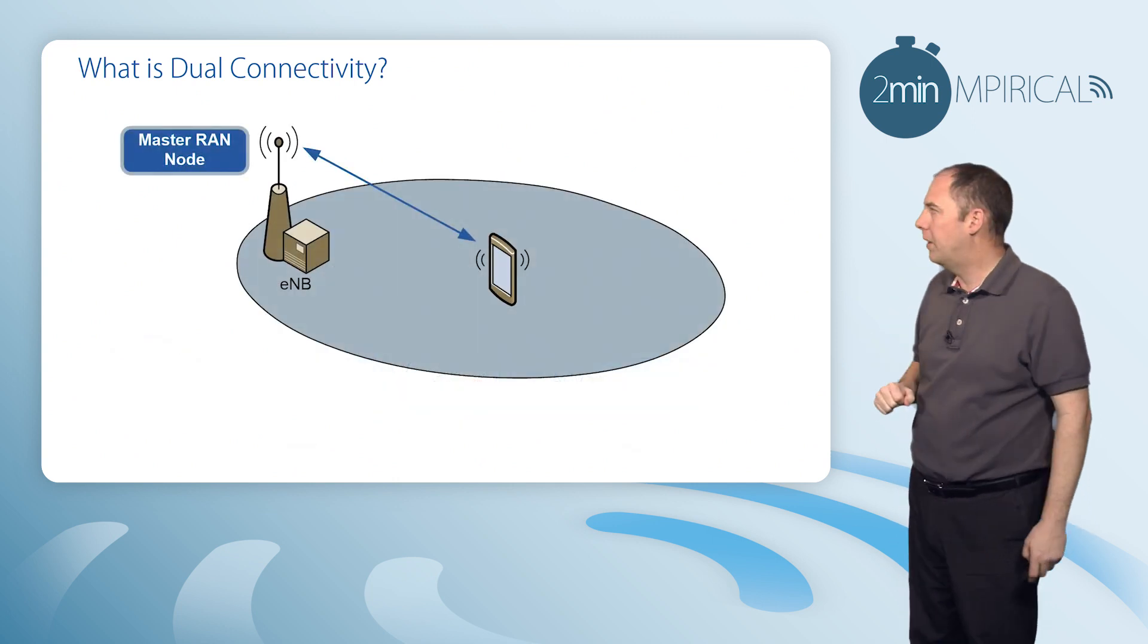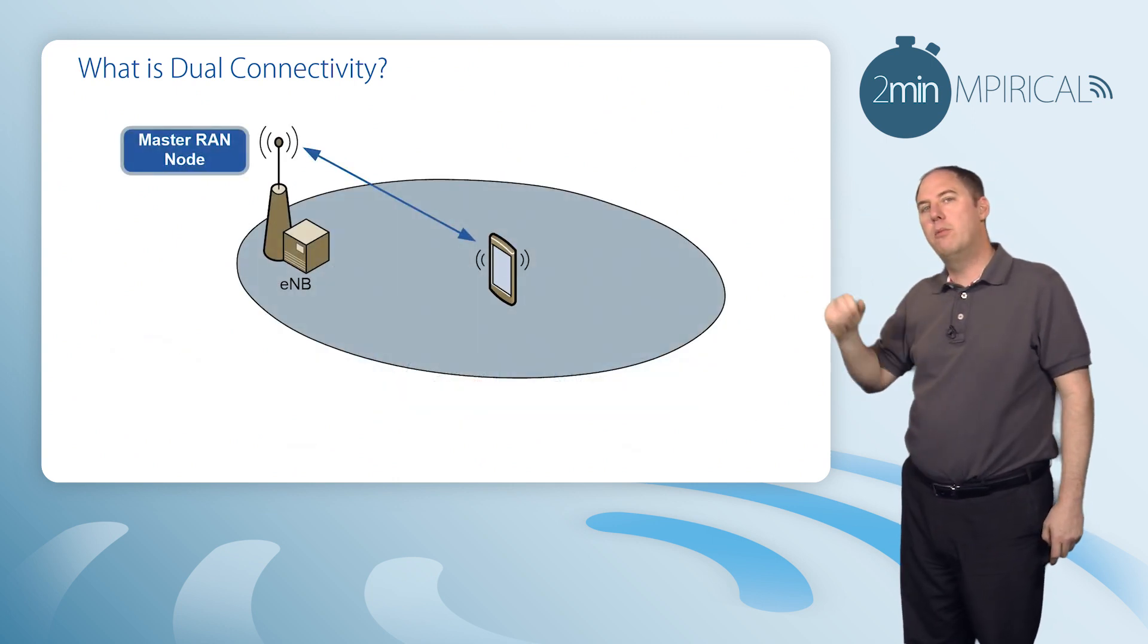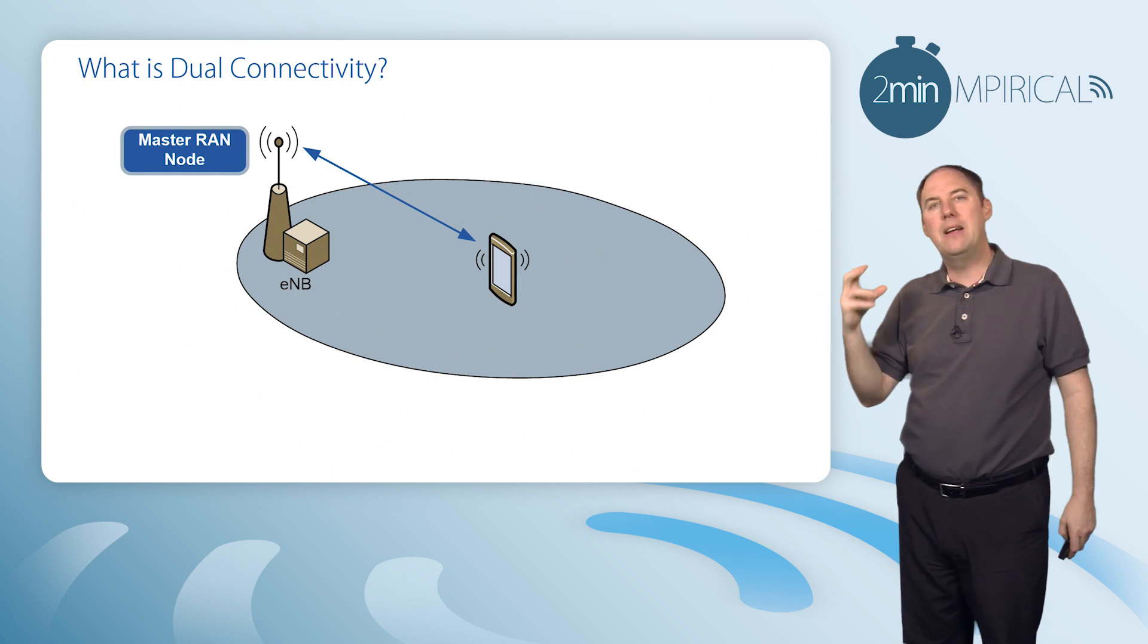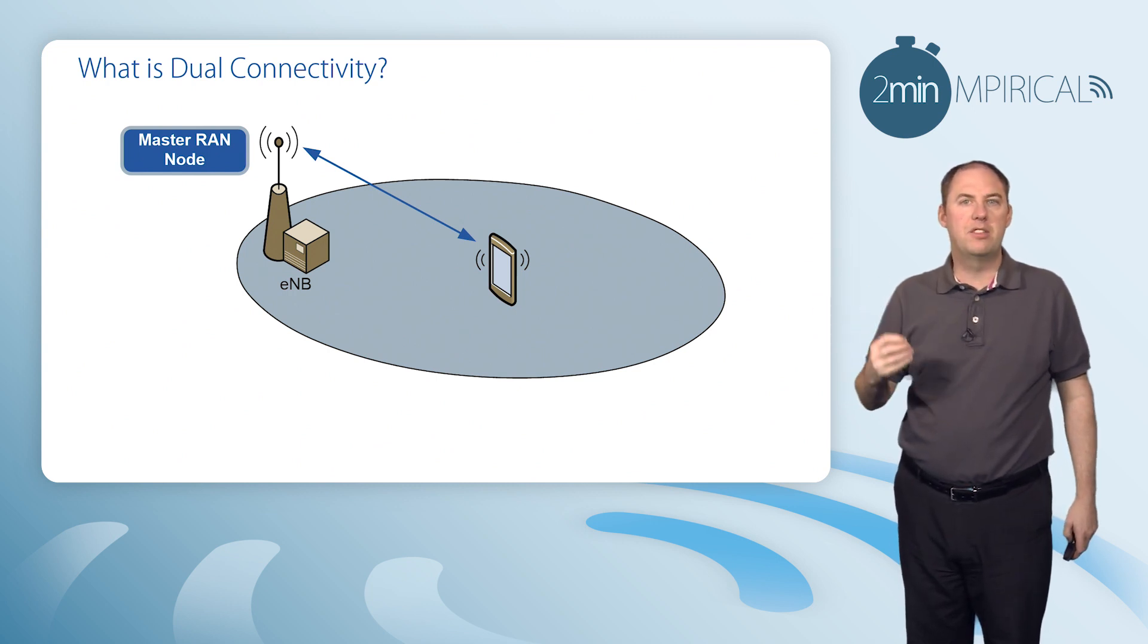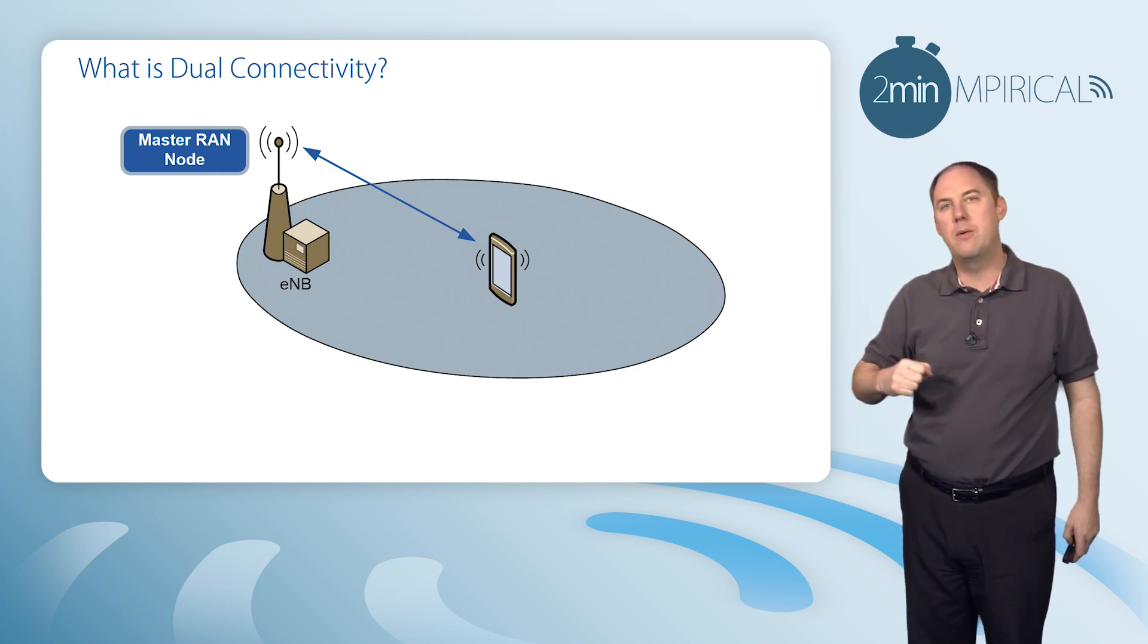So what is dual connectivity? Here we have a mobile currently on a cell, and that cell is referred to as the master RAN node—the RAN node being the radio access network.